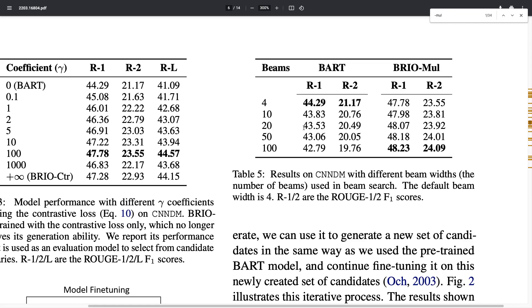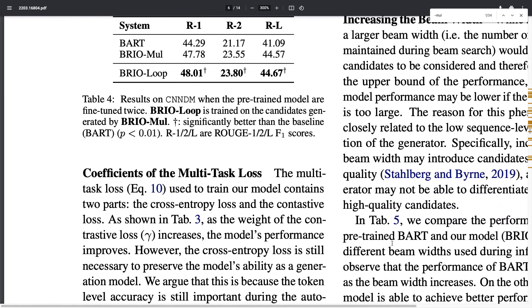However, if you use BRIO-Mul, the multiple objective model, you get higher scores when you increase beam sizes. This means two things: first, during training the model has learned to generate more diverse examples and combine them better. Second, during inference, the model is able to more effectively pick from candidates. When generating each of the 100 summaries, it generates them more independently and effectively, such that the quality of each individual summary is less affected, and the model can pick the best summary more effectively.